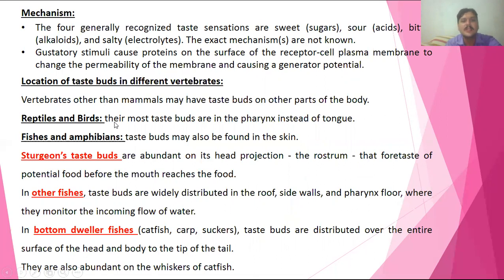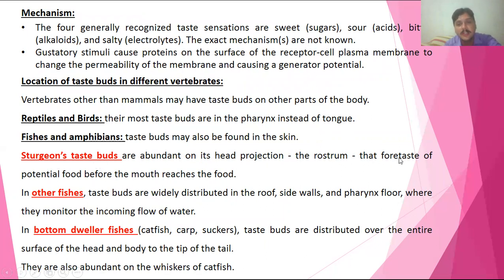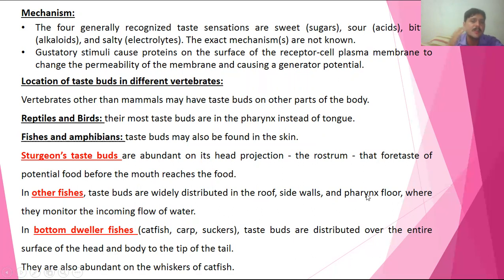The location of taste buds varies across vertebrates. In reptiles and birds, taste receptors are not present in the mouth but in the pharynx, so the sensation of taste occurs in the pharynx. In sturgeons, taste buds are abundant on head projections of the rostrum, allowing the fish to taste potential food before it even reaches the mouth. In other bottom-dwelling fish, taste buds are distributed across the face, side walls, surrounding the pharynx, and across the entire surface from head to the tip of the tail.